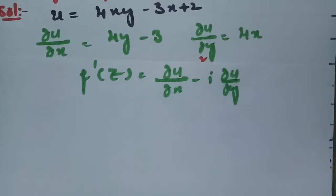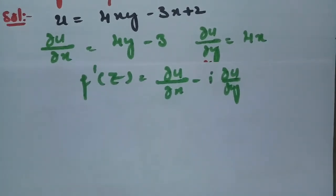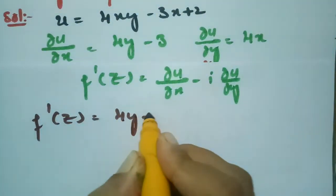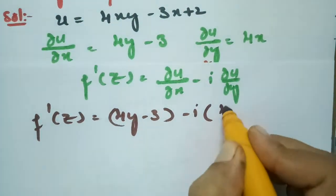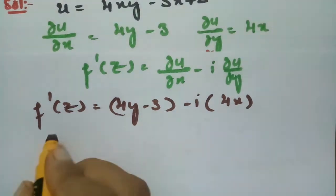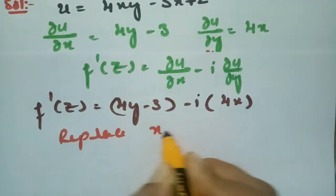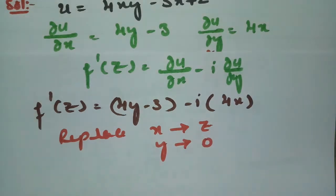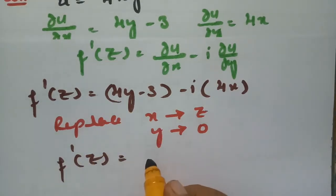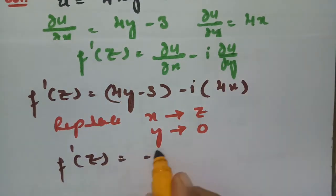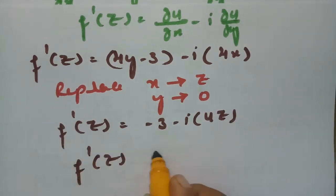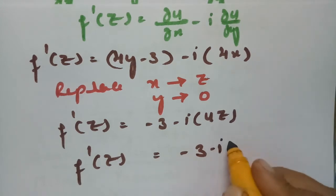We now have both values ready. ∂u/∂x = 4y - 3 and ∂u/∂y = 4x. So f'(z) = (4y - 3) - i·(4x). According to the Milne-Thompson method, we replace x by z and y by 0. After substitution: f'(z) = -3 - 4iz.